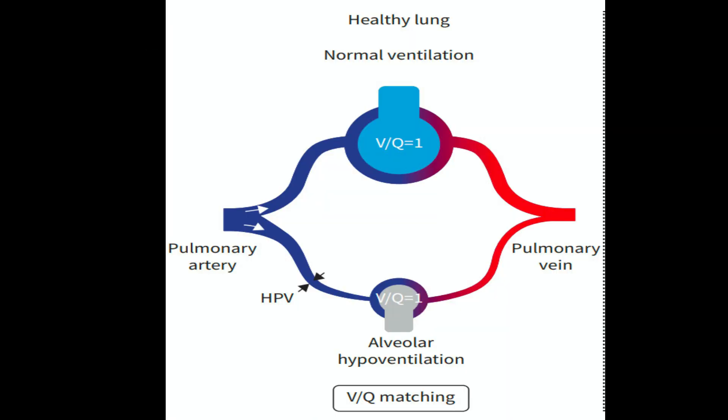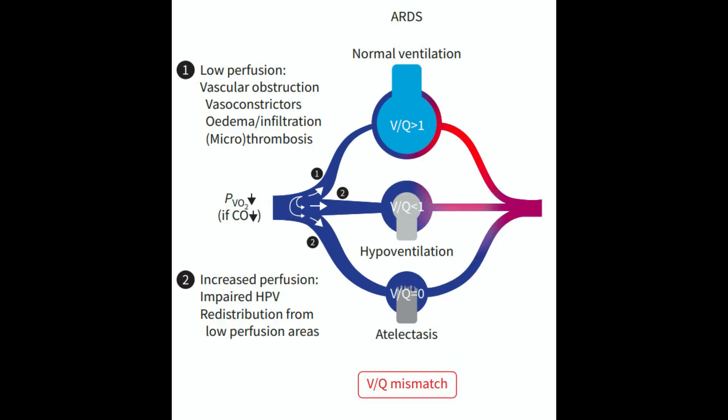In healthy lungs, alveolar hypoxia — such as that caused by hypoventilation — leads to a mechanism known as hypoxic pulmonary vasoconstriction, HPV. HPV results in the constriction of precapillary vessels, which matches the blood flow (perfusion, or Q) to regional ventilation (V), optimizing arterial oxygenation.